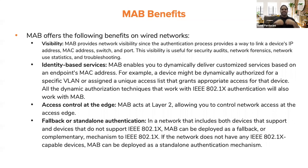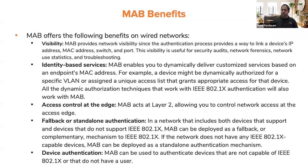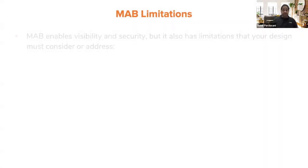Another benefit is fallback or standalone authentication — if 802.1x doesn't work or your device doesn't support it, you can always fall back to MAB as a backup. You should always prefer 802.1x, but MAB works as a fallback. Finally, MAB can be used for device authentication — authenticating devices not capable of IEEE 802.1x, like an old printer or fax machine that doesn't support dot1x.